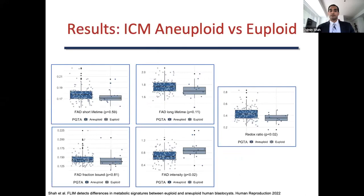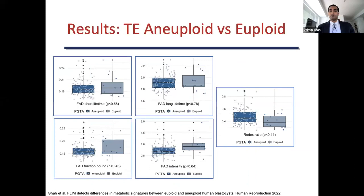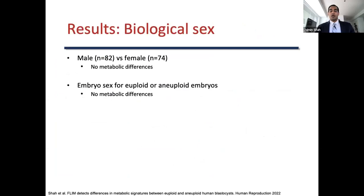In the last part of our analysis, we examined whether metabolic differences were also present when analyzing the trophectoderm alone. We manually segmented the trophectoderm in euploid and aneuploid embryos using the same cohort as the inner cell mass analysis. When comparing euploid versus aneuploid trophectoderm, significant metabolic differences were seen in NADH fraction bound and FAD intensity. We also looked at embryo sex — pooling all embryos together, comparing 46XY versus 46XX, no metabolic differences were seen, and looking within only euploid or only aneuploid groups also showed no metabolic differences.